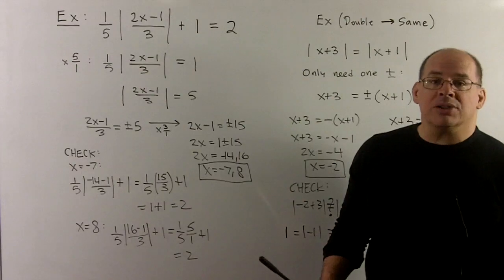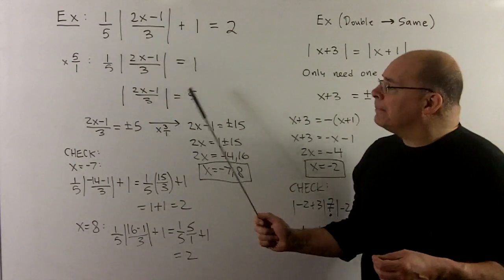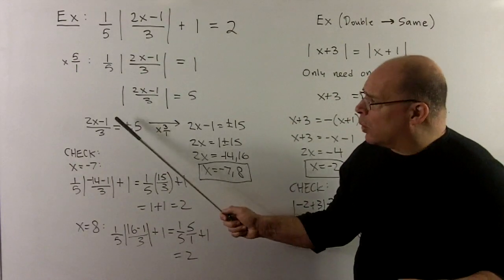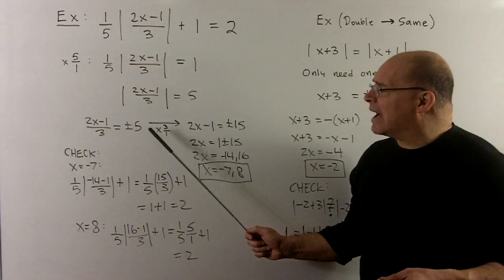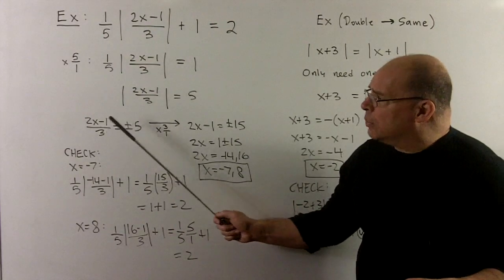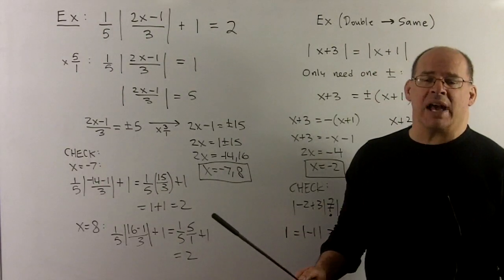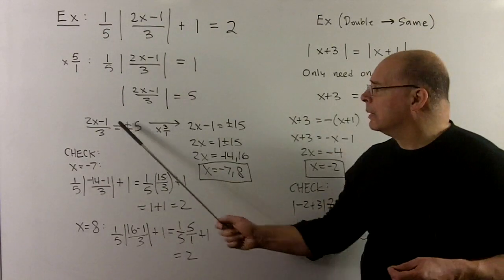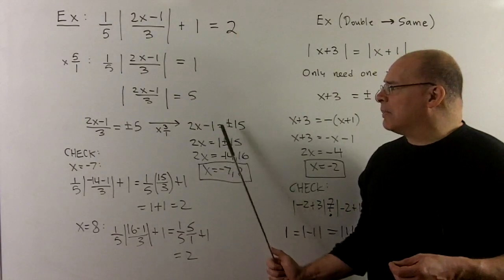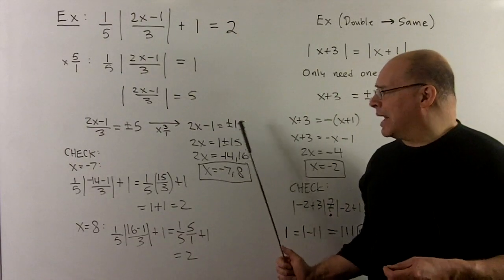If I want to take away the bars, then plus minus on the other side. So we get 2x minus 1 over 3 equal to plus minus 5. My next move, I want to clear out the 3 in the denominator, so I'll multiply both sides by 3 over 1. That'll give me 2x minus 1 equal to plus minus 15.